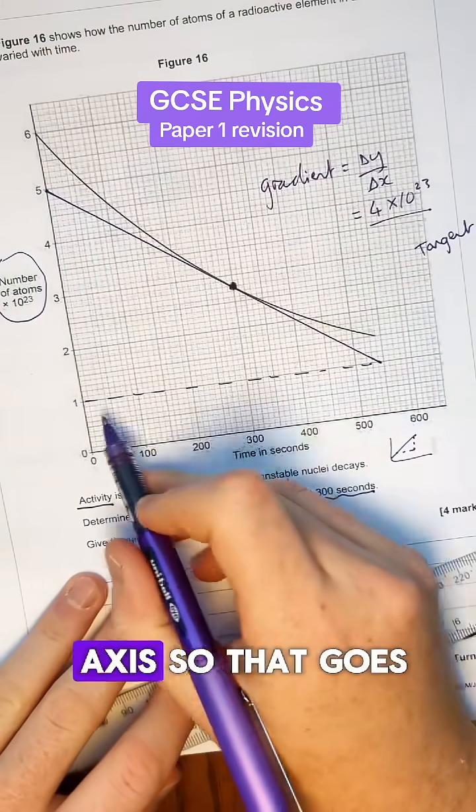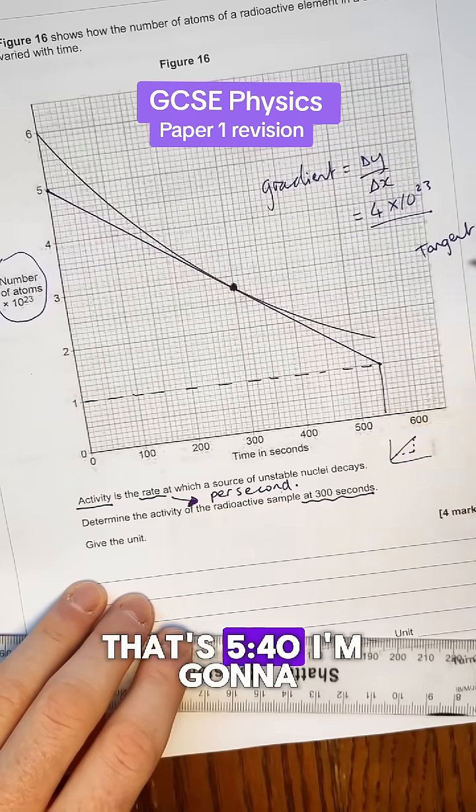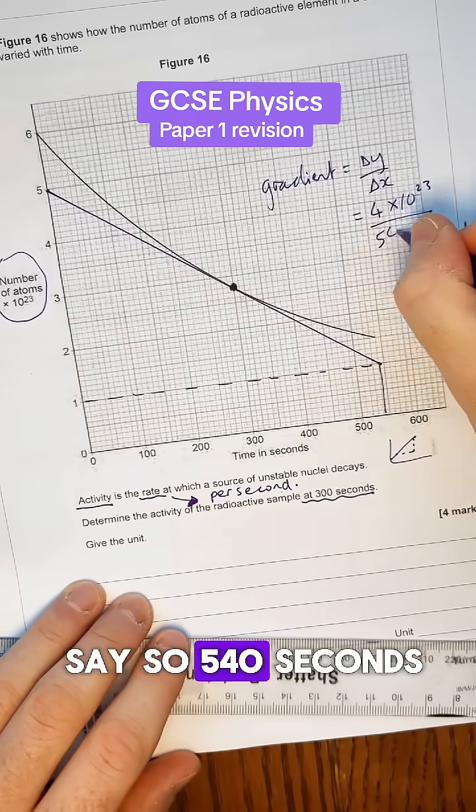Then we're going to do divide by change in x axis. So that goes from zero it goes all the way up to that's 540. I'm going to say it's 540 seconds.